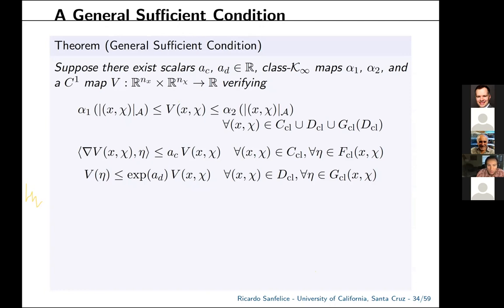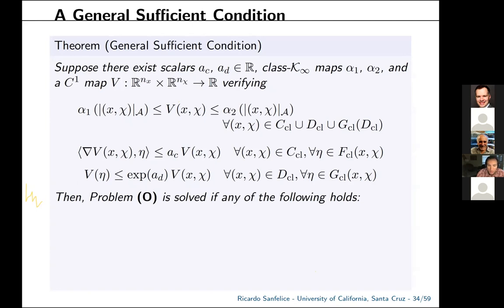With these conditions, the observer problem for hybrid systems with synchronized jumps is solved if: alpha_c is negative and the minimum dwell time is larger than the ratio of two constants — or if alpha_c is negative with average dwell-time lower bounded similarly — or if alpha_d is negative, we can tolerate rapid jumps provided the system does not flow too long. For the linear case, with V quadratic and x-hat minus x as the error, this becomes tractable LMI-type conditions.